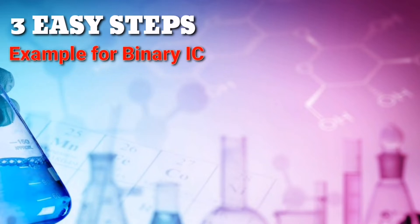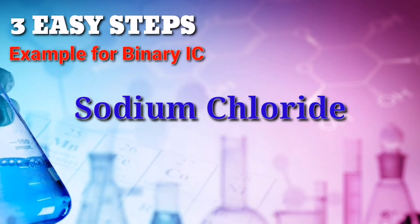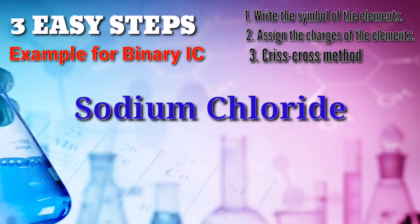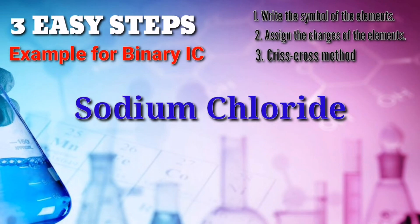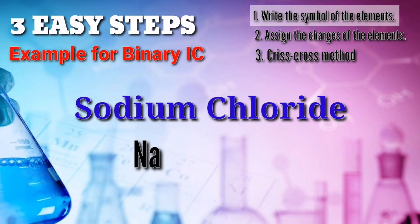Let's start first with the binary ionic compound. For example, we have sodium chloride. Now, let's follow the three easy steps. First, write the symbol of the element. Sodium's symbol is Na, and chlorine's symbol is Cl.